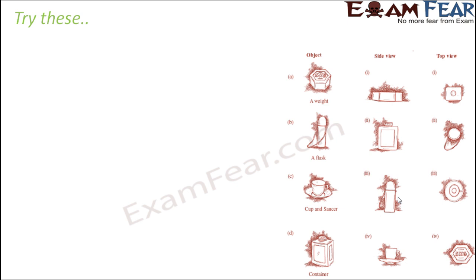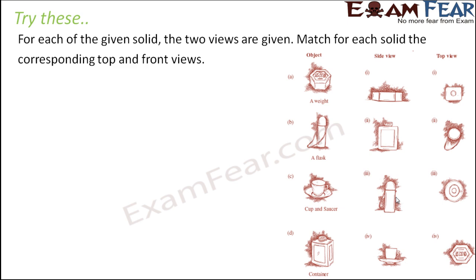Let's try a few exercises. For each of the given solids, two views are given — match each solid to its corresponding top and front views. The first object is a weight, a heavy coin that shopkeepers use to weigh groceries or vegetables. When you look at it from the side, you see only this portion — that's the side view. From the top, you see the markings on the face. So this matches to the last option.